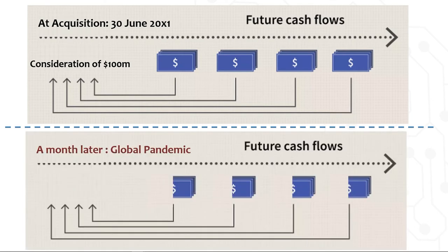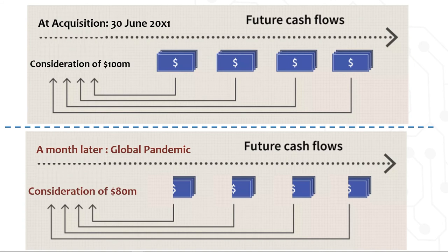Now, what if immediately after the acquisition there is a global pandemic, which leads to a deep recession? And as a result, Heinz now expects to generate lower future cash flows from Kraft. Would Heinz still pay $100 million for Kraft? Of course not. Due to the change in expectations and the fact that they expect to receive lower future cash flows from Kraft, they would determine the value of Kraft to be lower — and let's say they would be willing to pay only $80 million for the business of Kraft.